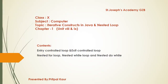Hello friends, this presentation is about iterative constructs in Java and nested loops. It is taken from class 10th book Computer Application, chapter number 1, units 8 and 9. It has the following topics: entry control loop, exit control loop, nested for loop, nested while loop, and nested do-while loop. Let us discuss all entry control loop and exit control loop one by one.